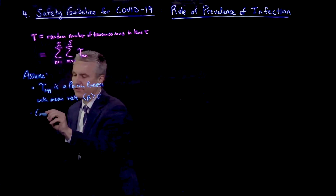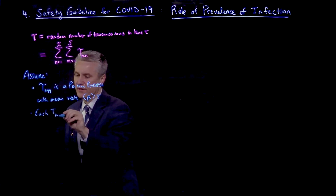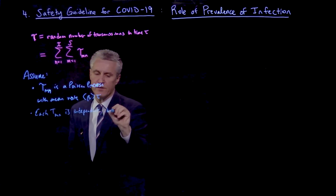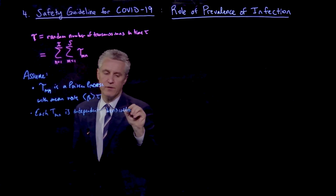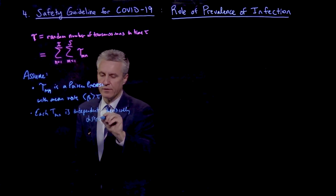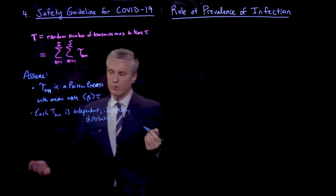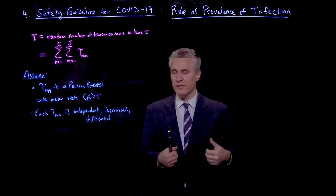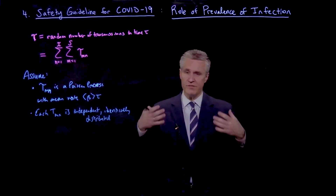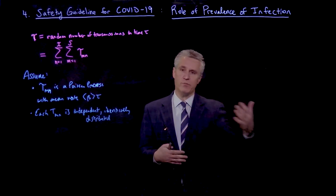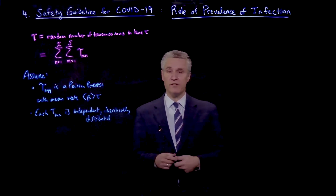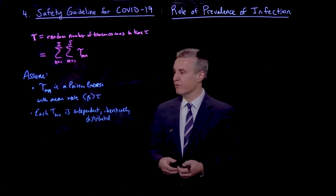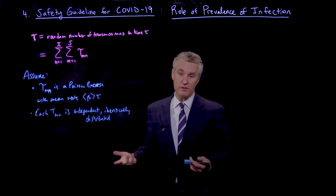We also assume that each T_mn is independent and identically distributed Poisson processes. So in other words, if I take two different pairs of individuals and consider the transmission, they're not correlated. That is an assumption because, of course, if the infected person is sitting in one place, you might expect that people nearby, even within six feet, might be more likely to be infected. We are leaving that out because we are considering airborne transmission in a well-mixed room where there should not be any such correlations as a first approximation.